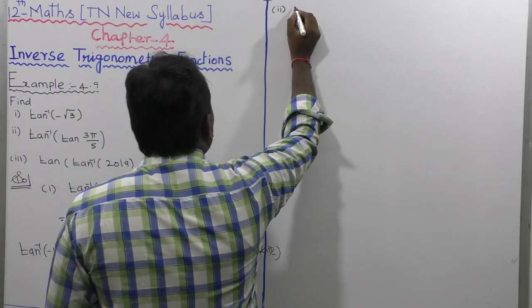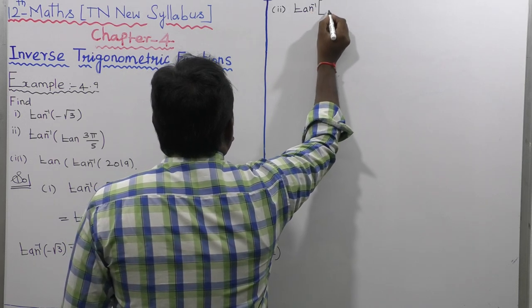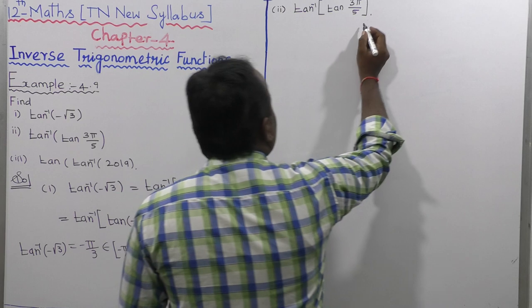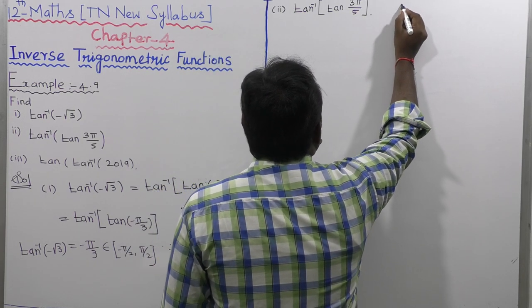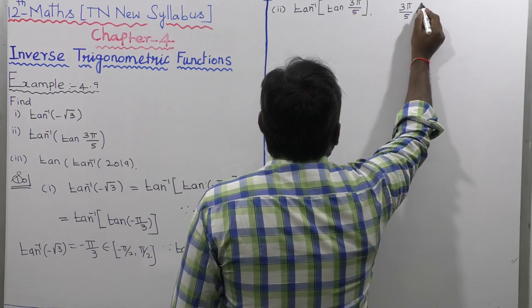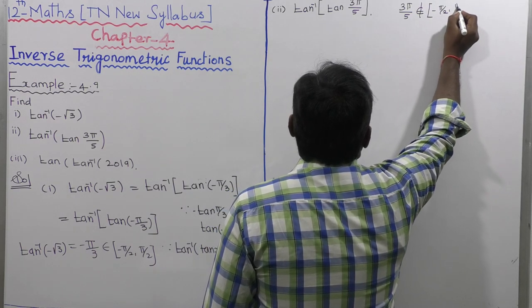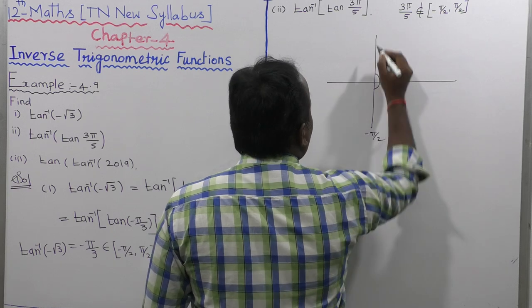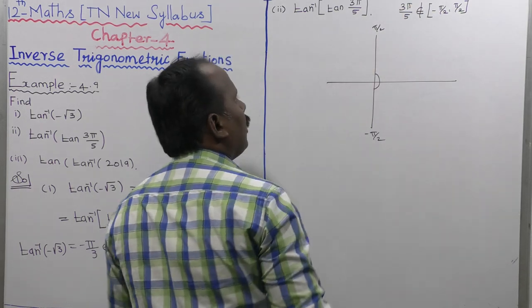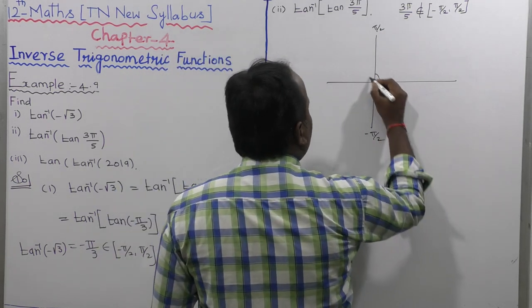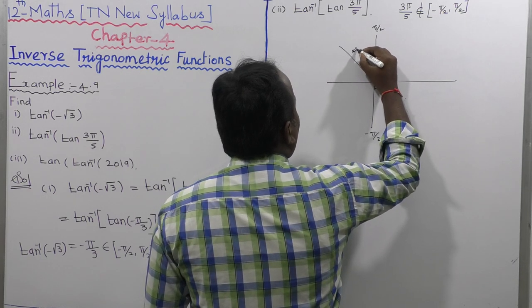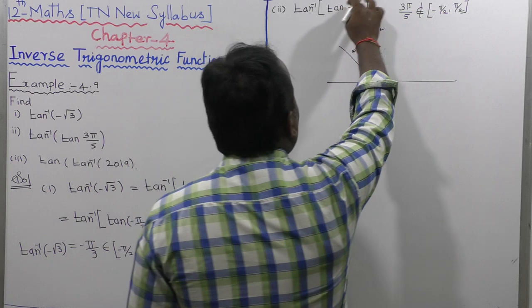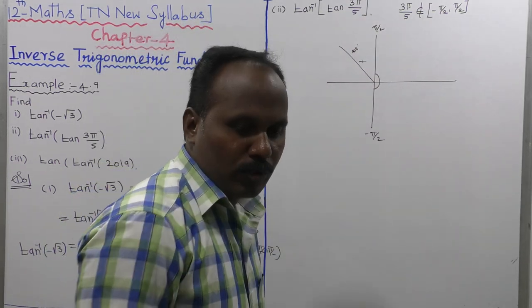The second subdivision is tan inverse of tan(3π/5). Now 3π/5 is not in the range for the tan inverse formula, since 3π/5 is not in the interval (−π/2, +π/2). Note that 3π/5 equals 108 degrees, which is not in the range of tan inverse. So we need to use a different approach.